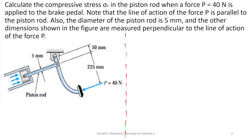We are going to look at this diagram, which is the braking system of a vehicle. This is the brake pad and this is the piston rod. We know that the driver is applying a force of 40 Newton on the brake pad to cause the vehicle to stop.